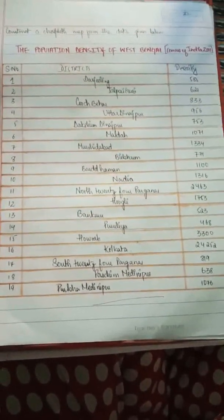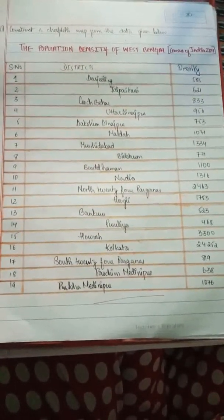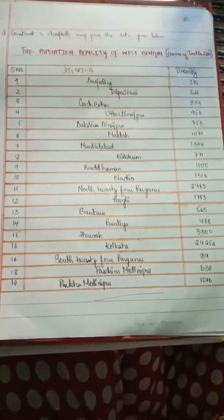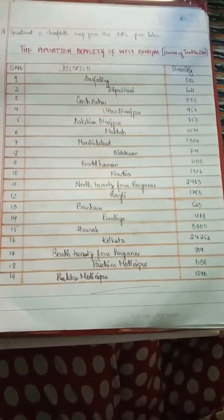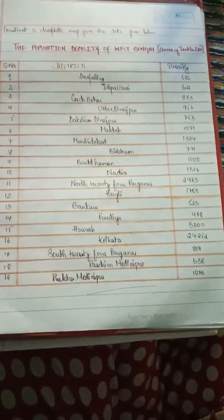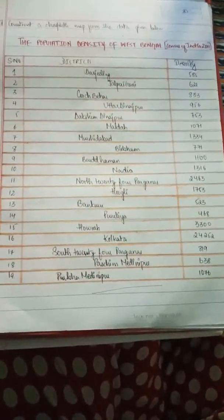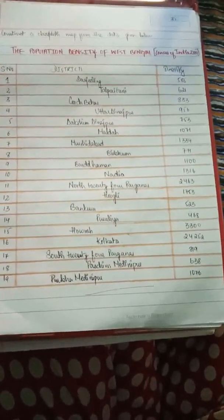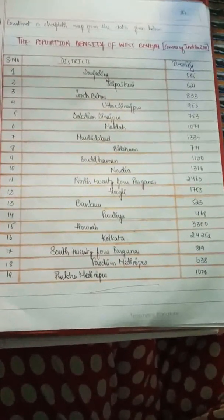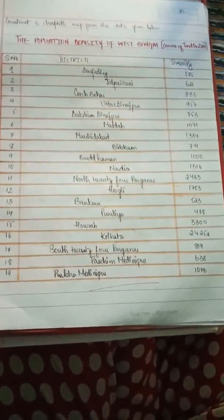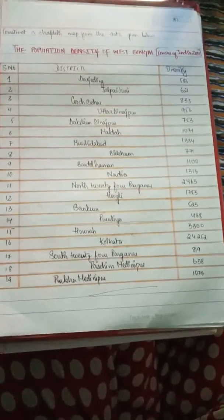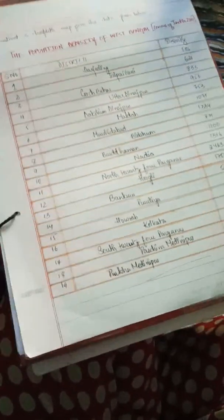Everyone, today we will learn the construction process of the choropleth map, which is also known as the choropleth method or shading method. The question is to construct the choropleth map from the data given below — population density data of West Bengal according to Census 2011, with 19 districts and their density values. We need to calculate and construct the choropleth map.